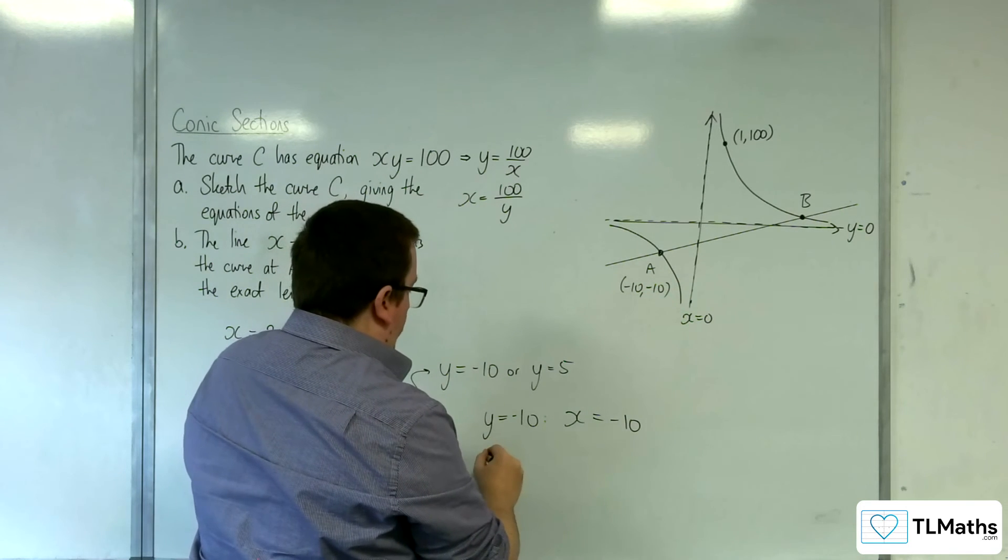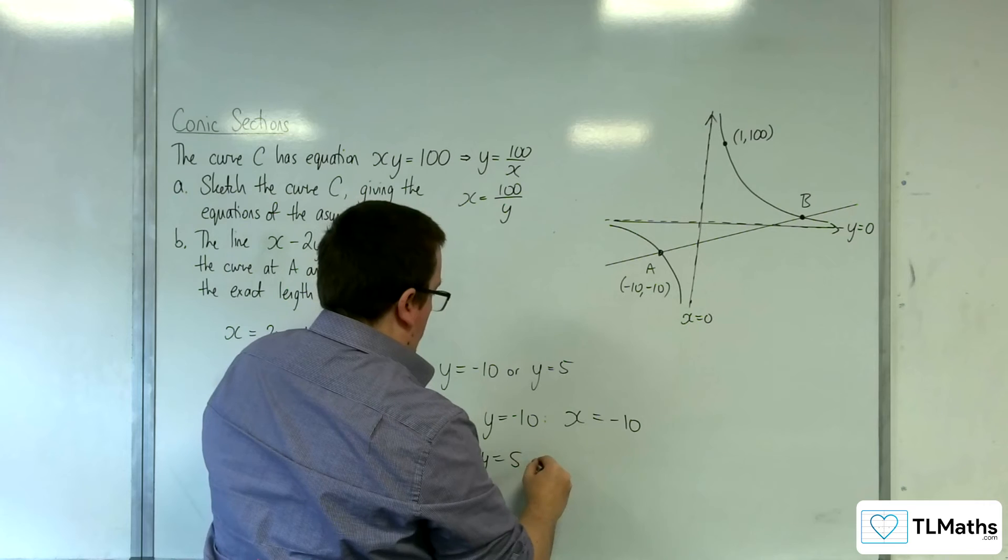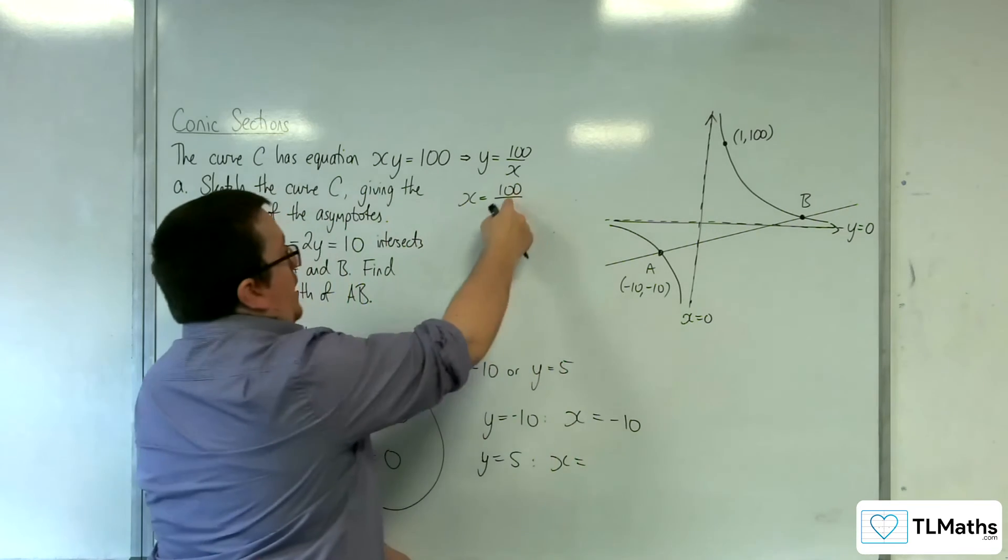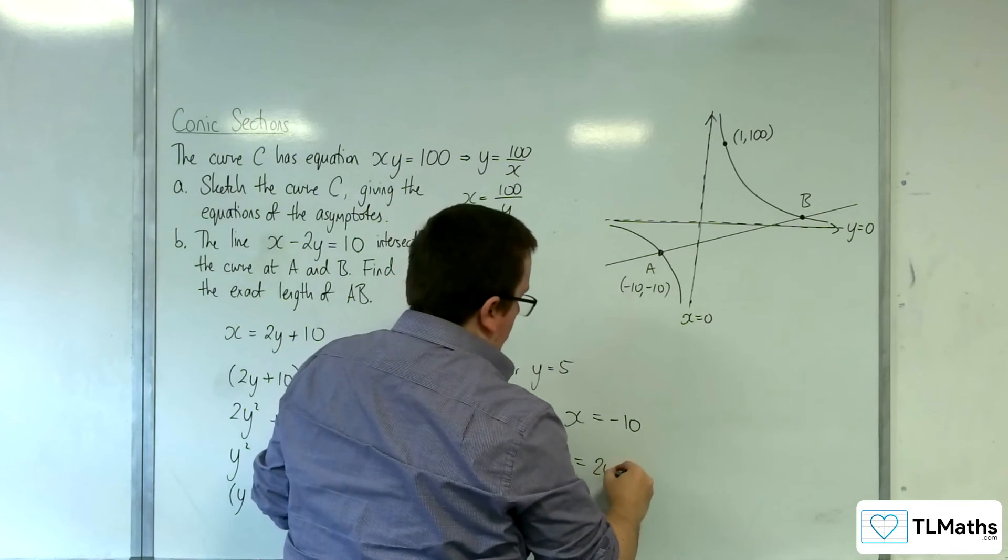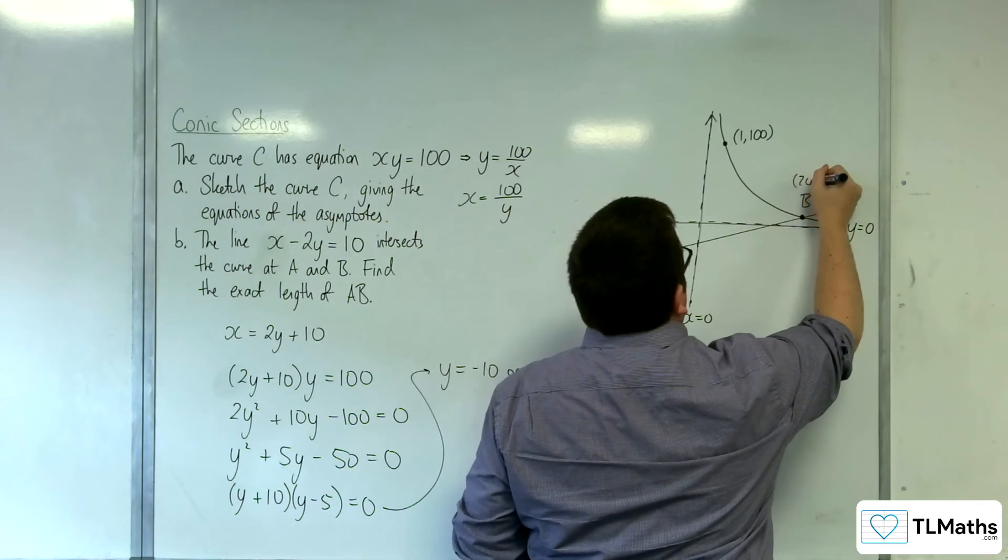And when y is equal to 5, x is going to be equal to 100 divided by 5, which is 20. So that point is 20, 5.